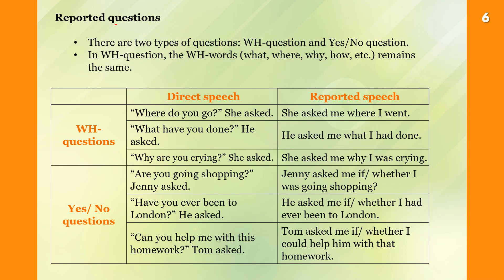Reported questions. There are two types of questions: WH questions and yes/no questions. In a WH question, the WH words — what, where, why, how, etc. — remain the same. For example: 'Where do you go?' she asked. She asked me where I went.